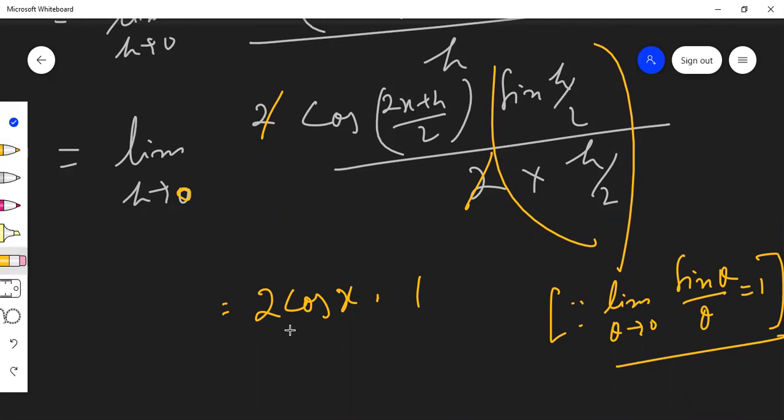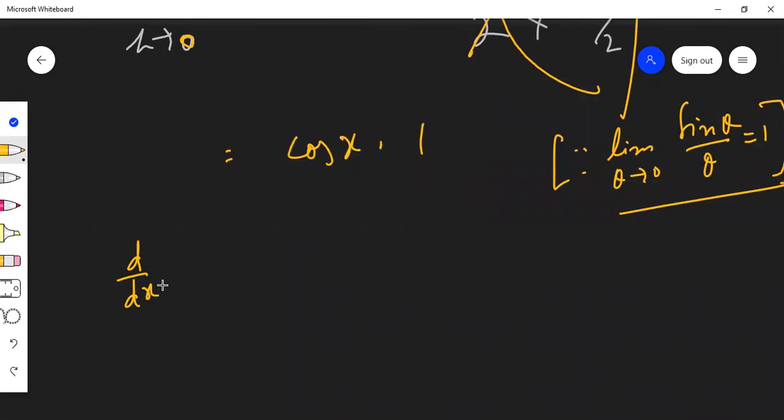So let's get rid of this 2 from here. So what is the answer? d/dx of sin x is equal to cos x. Sin x derivative is cos x.